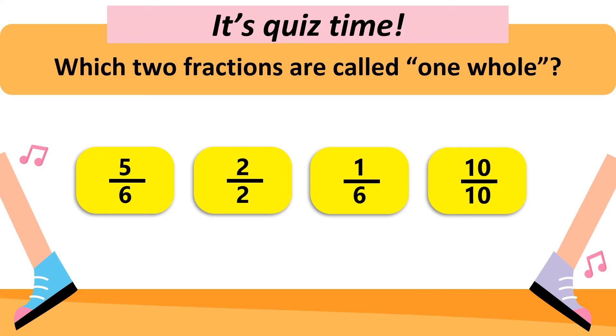Now, the question changes. Which two fractions are called one whole? Remember, one whole is when all of them are colored or shaded. So we have two out of two and ten out of ten.